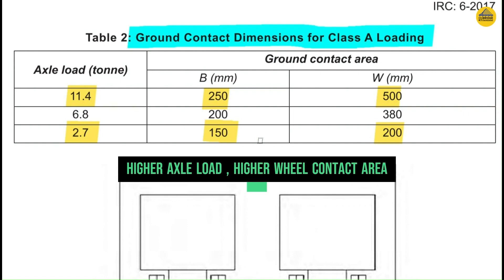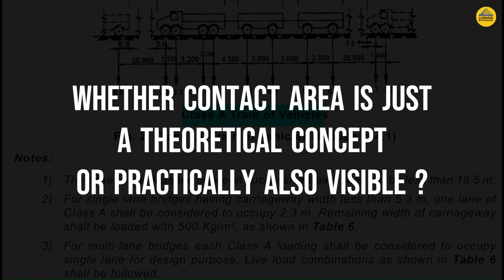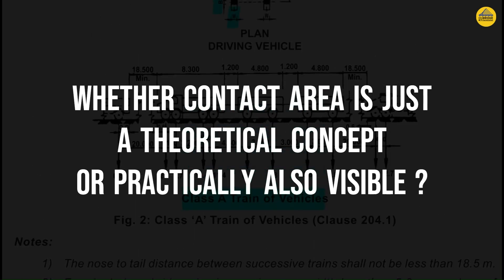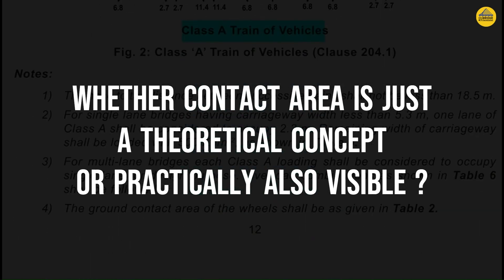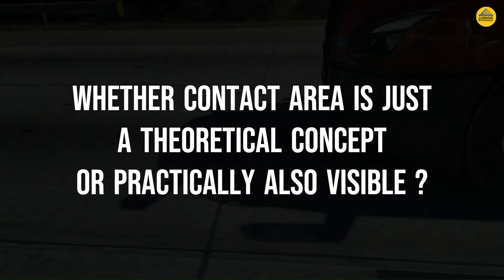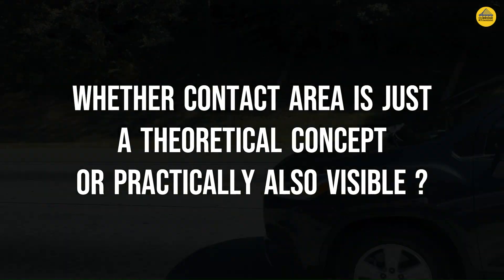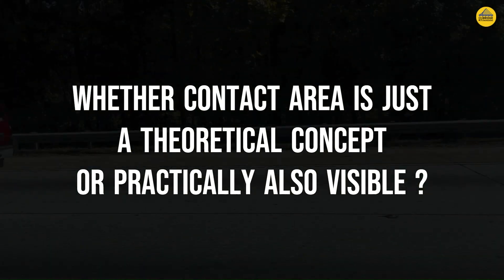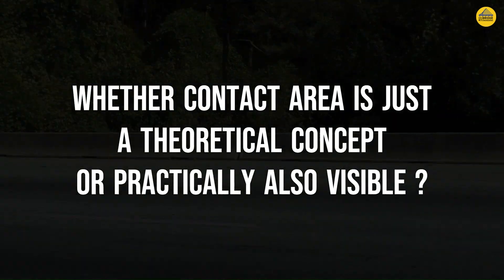So one thing is very sure: there is definitely a theoretical concept known as contact area. Now whether it is also practically visible and practically significant — let's find out. For that we need to go on the road, observe the wheels of moving vehicles, and figure it out. One by one I'll bring some examples on your screen, and at the end you'll see a very clear example where all your doubts will be resolved.